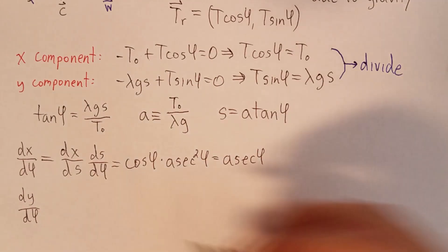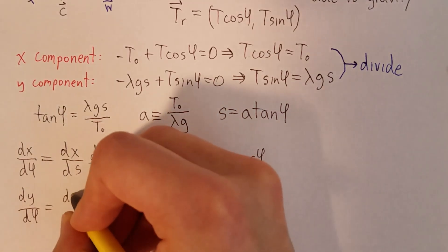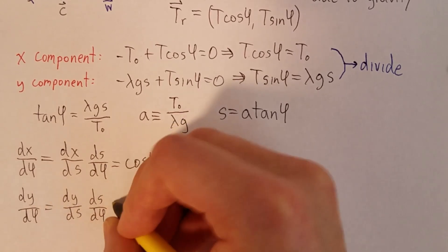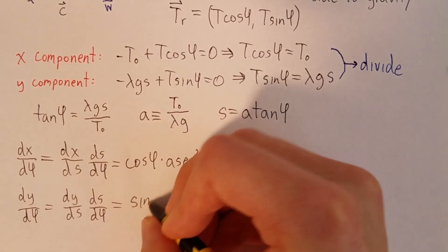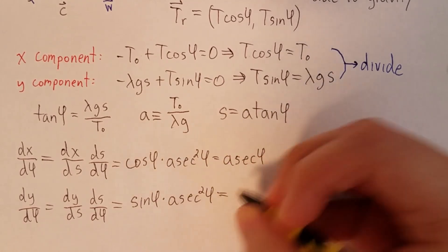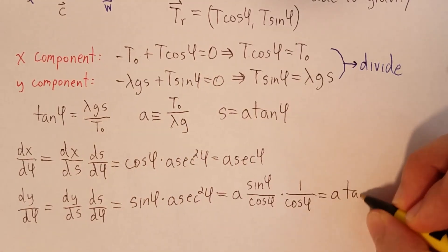Now for dy/dφ, using the chain rule, that's dy/ds times ds/dφ. And from the parametrization, that's sine φ times a secant squared of φ, which gives us a tan φ secant φ.